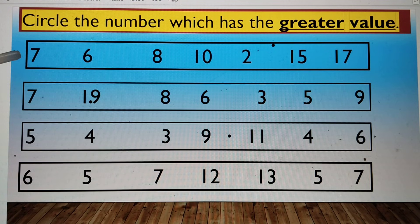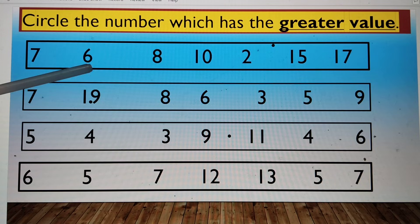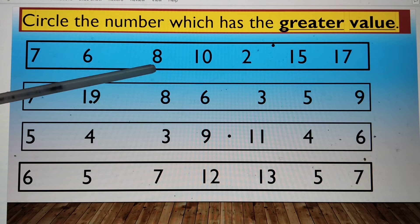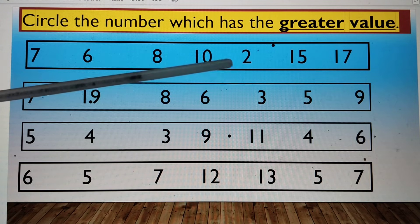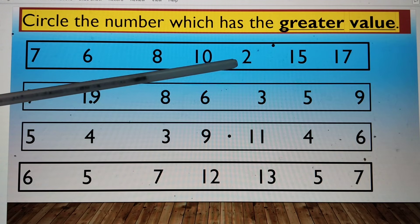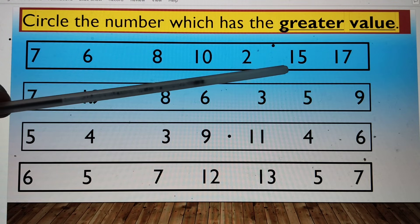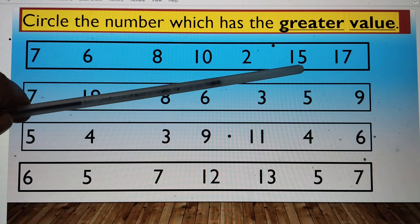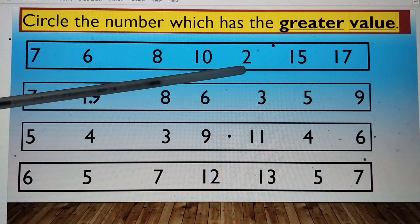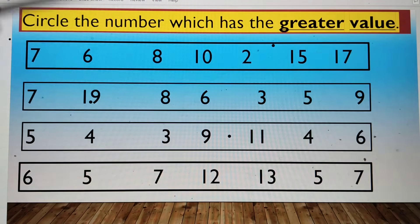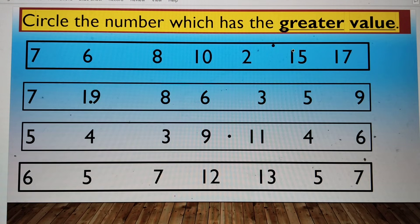The first series starts with number 7, number 6, number 8, number 10, number 15, number 2, and number 17. So the greatest number here is number 17.